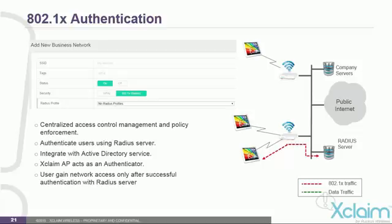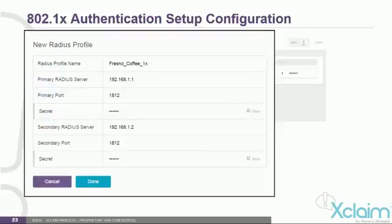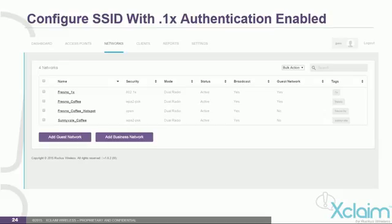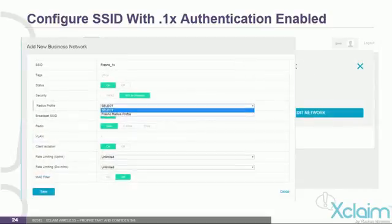Cloud Manager also supports 802.1x authentication. When trying to connect to a wireless LAN against a RADIUS server, the AP will block the client and tell it to authenticate. The client then sends 802.1x traffic to the server, and only when the client is authenticated is data allowed to pass through. To configure 802.1x authentication, under the Network tab, select Add RADIUS Profile, fill in the new RADIUS profile information, and select Done. You'll need to know your RADIUS profile information and the secret key. After creating the RADIUS profile, configure an SSID with the 802.1x profile by going to the Networks tab, clicking on the 802.1x network, clicking Edit Network, selecting 802.1x under Security, selecting your RADIUS profile, and clicking Done.